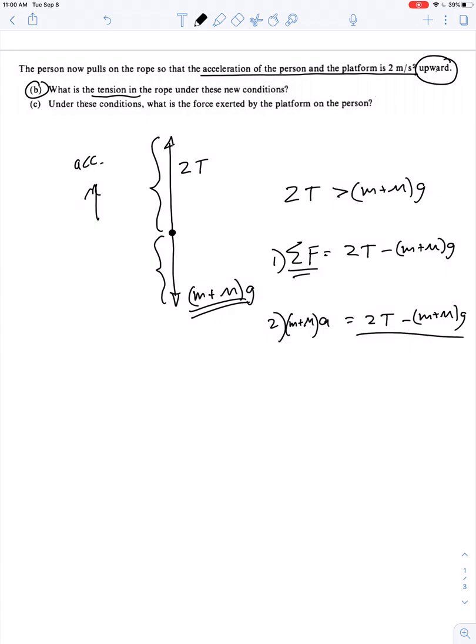So if we're trying to solve for the tension, then we just need to do a little bit of algebra in our third step. 2T is equal to M plus M times A plus M plus M times g. Or the tension is equal to the mass of the entire system times the quantity A plus g all divided by 2.